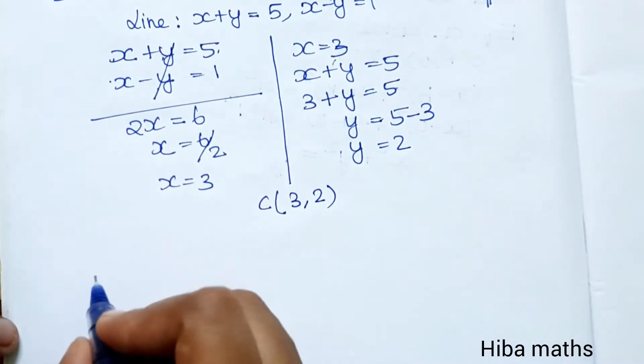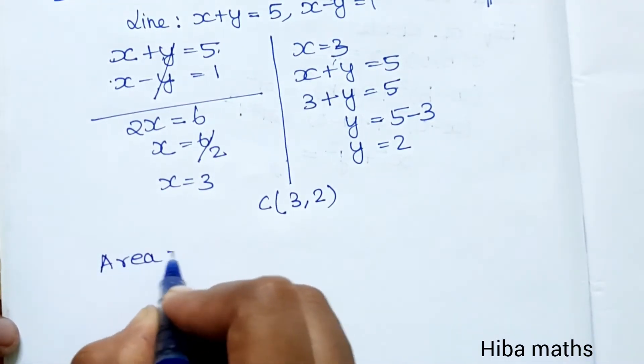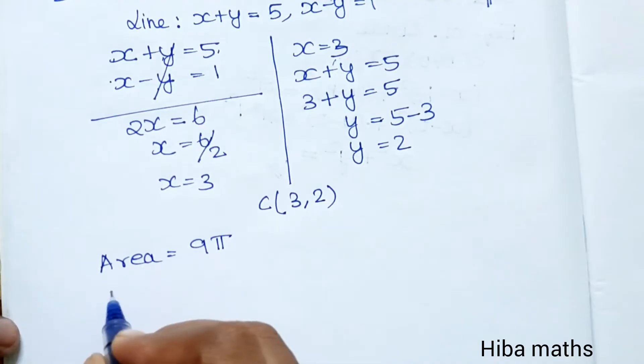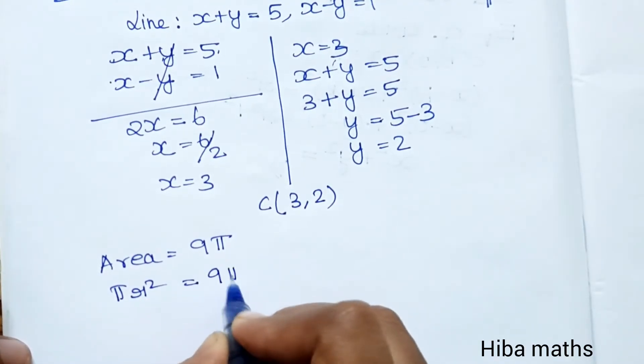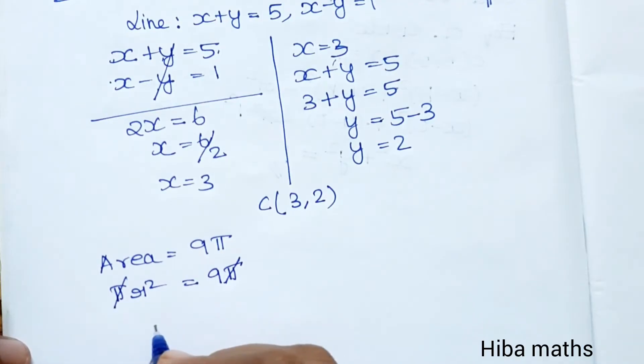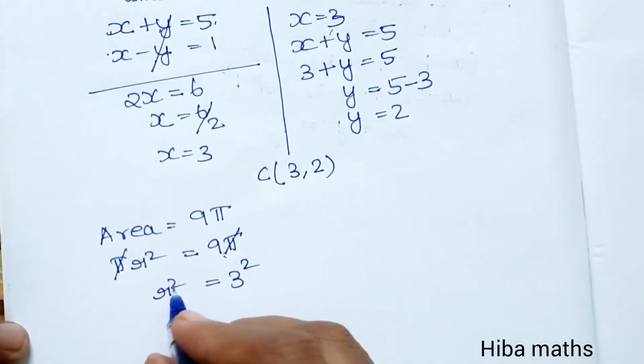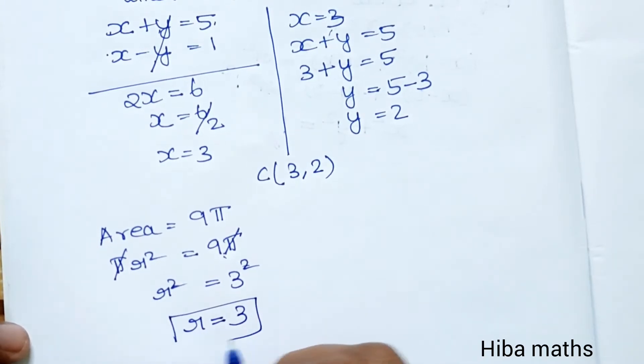Now we need the radius. Given area equals 9π, we use the formula πr²=9π. Canceling π, we get r²=9, which means r²=3². Therefore the radius equals 3.